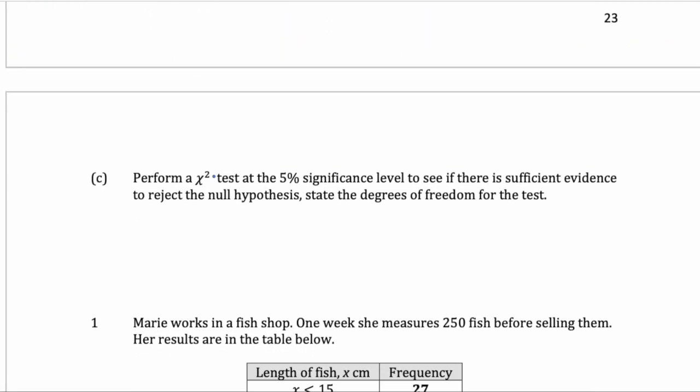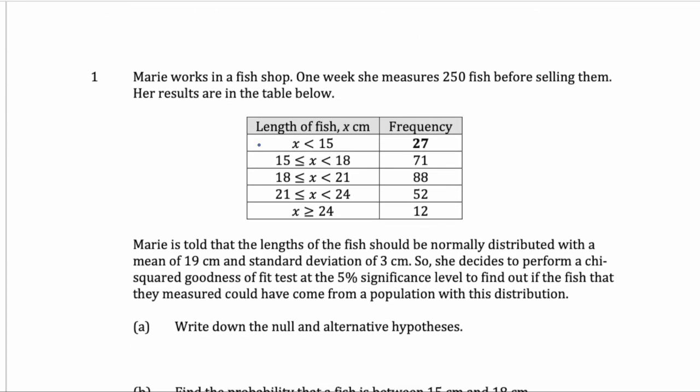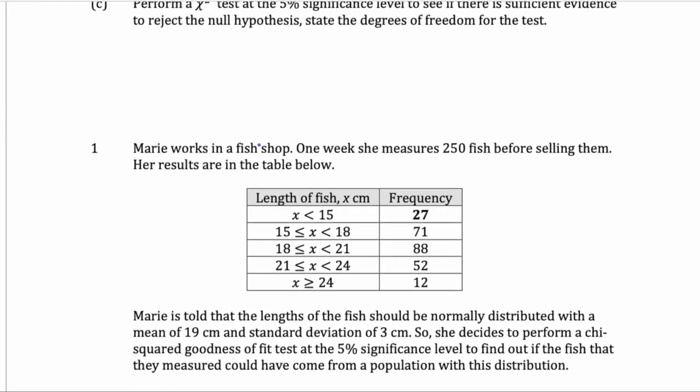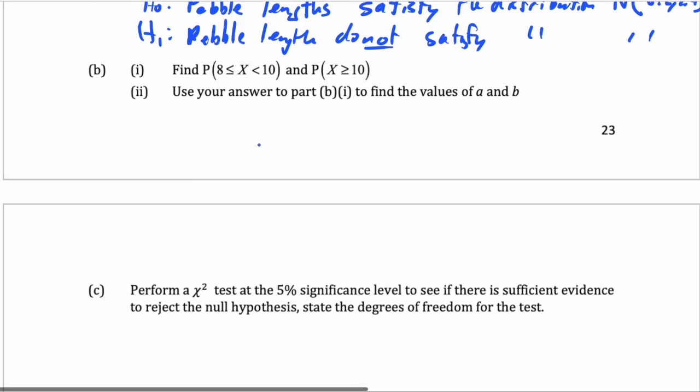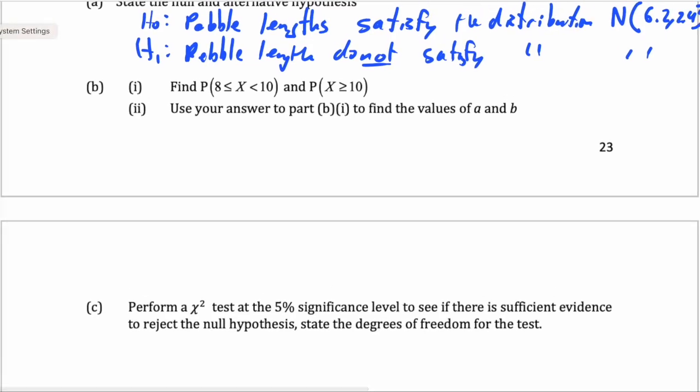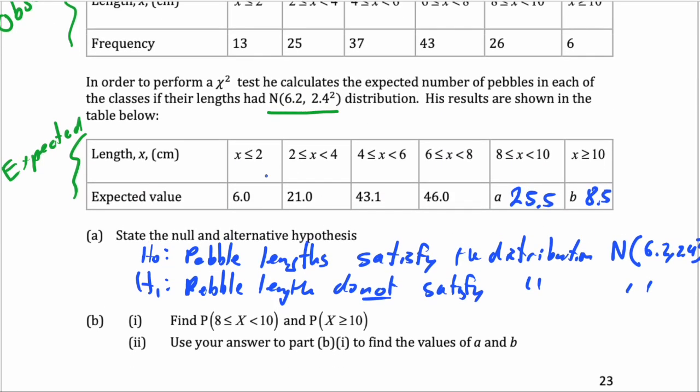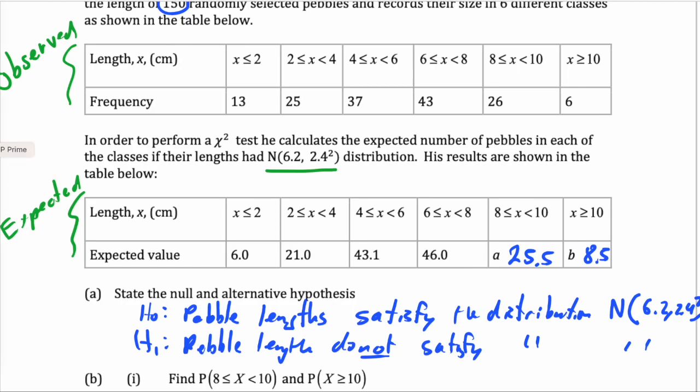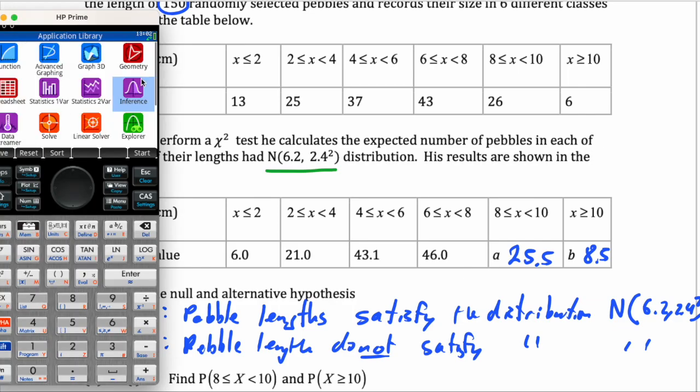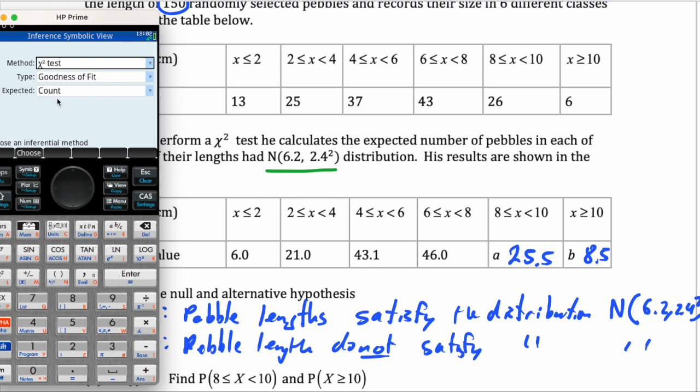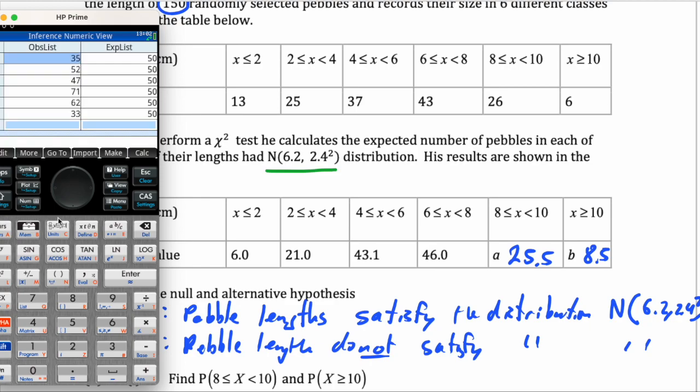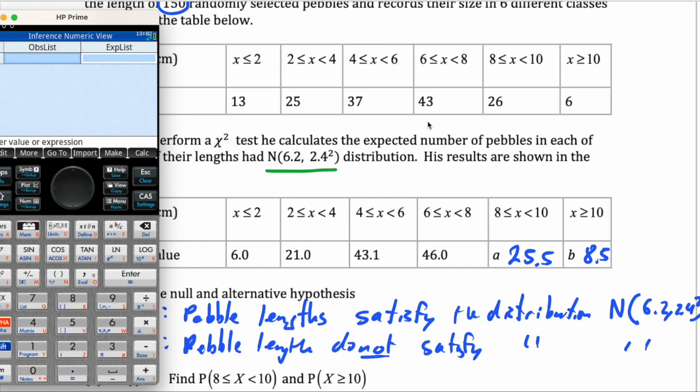We're going to do a 5% significance level test. The critical value is not given, so we will have to compare it to the p-value. So let's do that on the calculator. I need to get my data here and go to apps, inference. We'll stick it on count and not probability, but count. Go to num. I will clear this and type in these numbers,